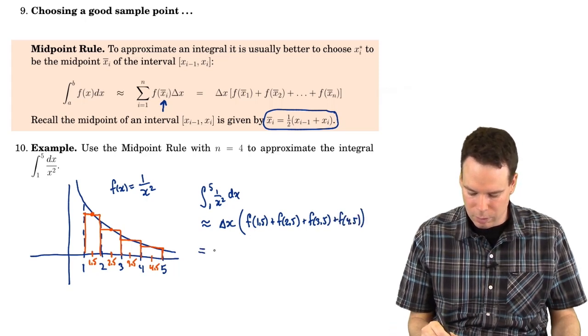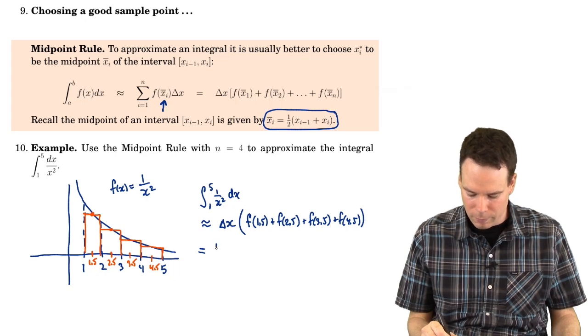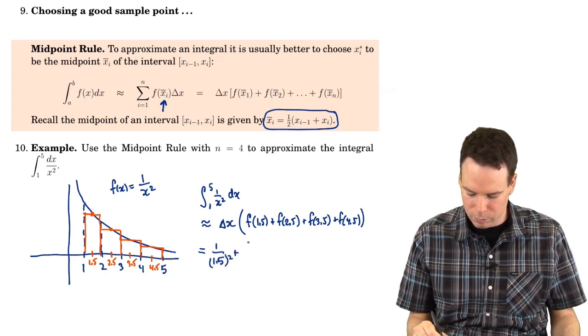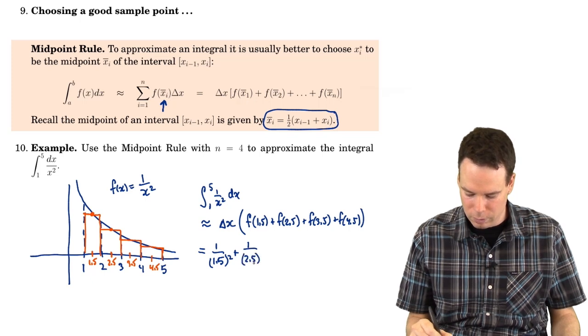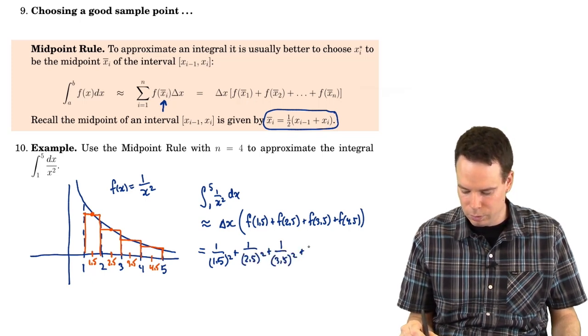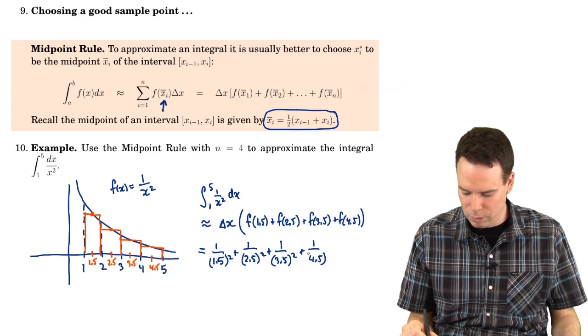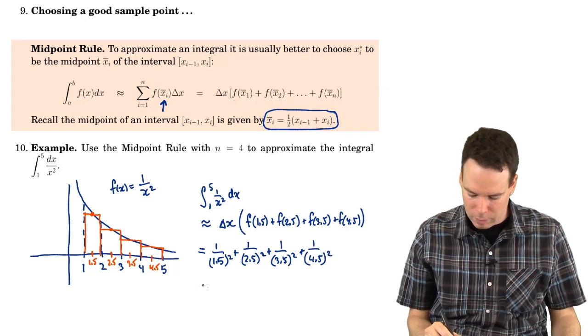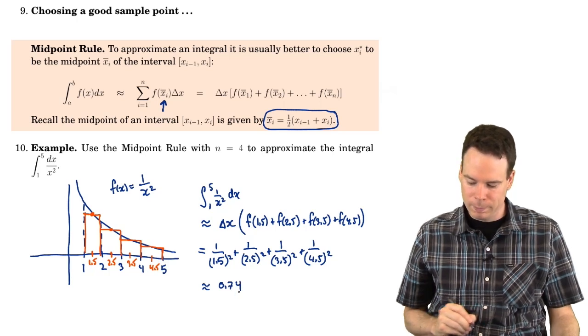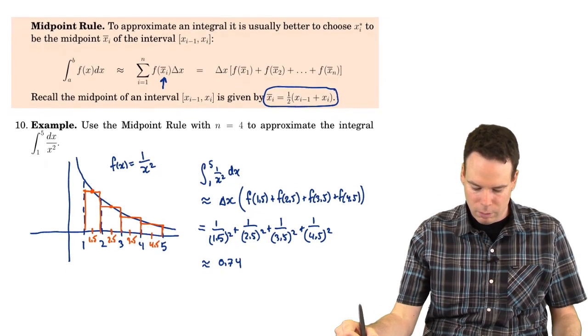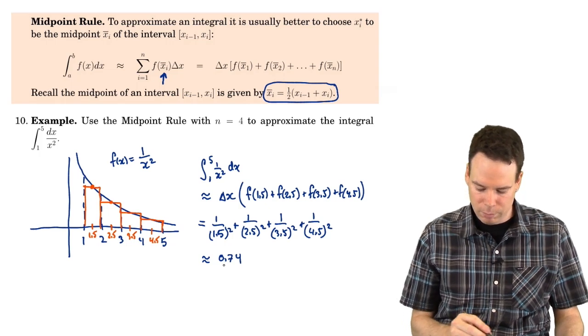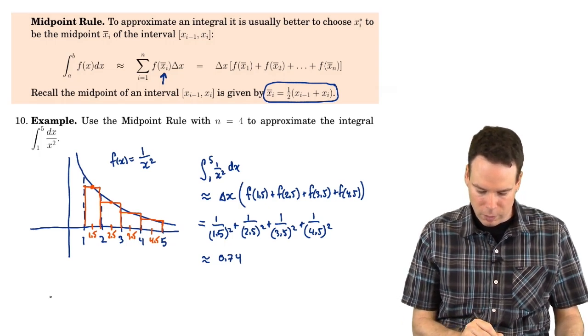And so this would be then 1 times 1 over 1.5 squared plus 1 over 2.5 squared plus 1 over 3.5 squared plus 1 over 4.5 squared. And we add up all these values and we get that this is approximately 0.74. So there is our approximation of the integral using midpoints with 4 slices.